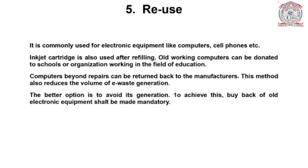The fifth method is reuse. It is commonly used for electronic equipment like computers and cell phones. Inkjet cartridges can also be reused after refilling. Old working computers can be donated to schools or organizations working in the field of education. Computers beyond repair can be returned back to the manufacturers. This method also reduces the volume of e-waste generation. The better option is to avoid its generation altogether. To achieve this, buyback of old electronic equipment shall be made mandatory.